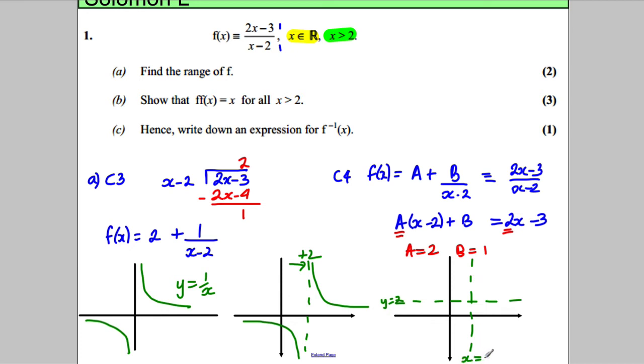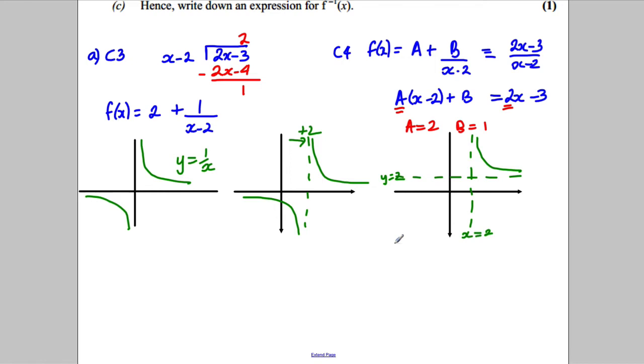Now we're told in the question we only want x bigger than 2, so we don't even care about this portion of the graph at all. We just care about this bit. And so what is the range? Well, the graph can take any number in the world bigger than 2, not equal to 2 because it never gets there. So therefore f(x) > 2 is our range.